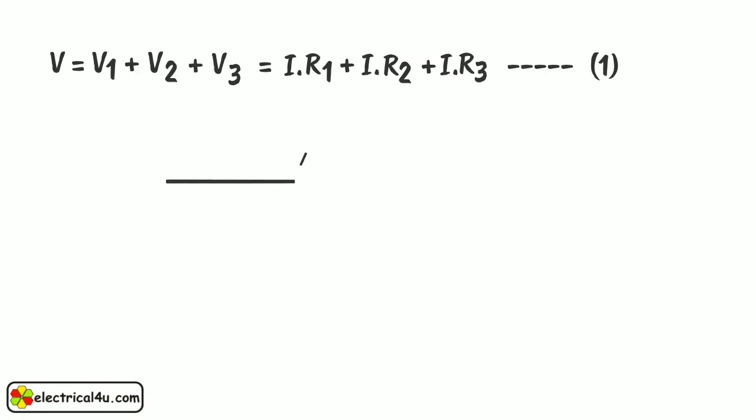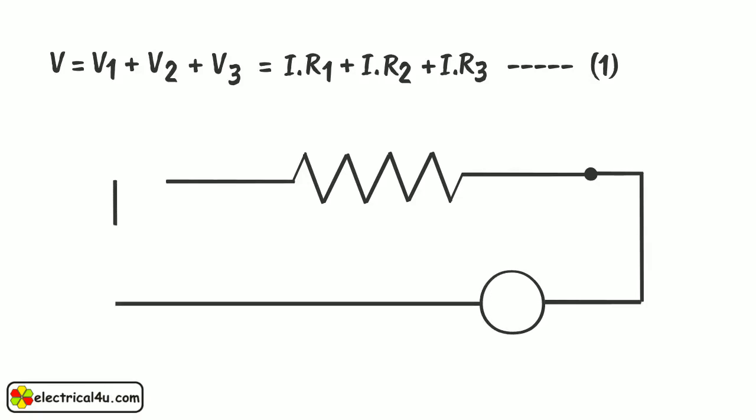Now, we consider the equivalent resistance of this series combined resistors is R. So, at that case, entire supply voltage will drop across this single equivalent resistor of the system. That means, in this case, V equals I dot R. This is equation 2.